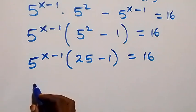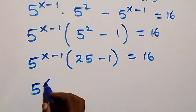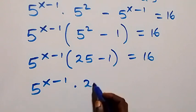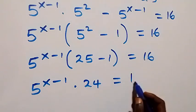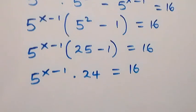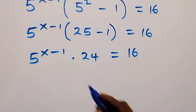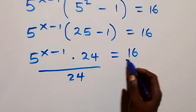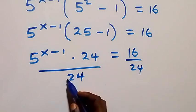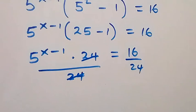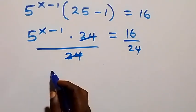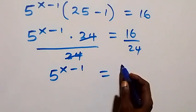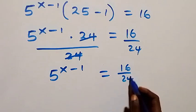So we have 5 raised to power x minus 1, multiplied by 25 minus 1, that is 24, equals 16. The next thing we do is divide both sides by 24. The 24s cancel each other, giving us 5 raised to power x minus 1 equals 16 over 24.